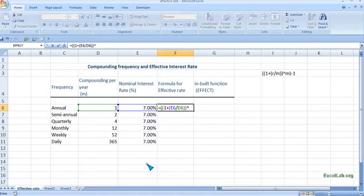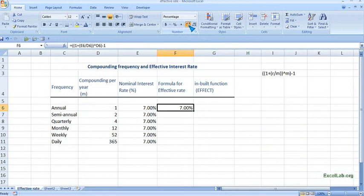Just check the parentheses—they should match. So it is seven percent only for the annual. Put the percentage sign and take up to three decimals. You can use autofill, pull it, and you can see the effective rate.